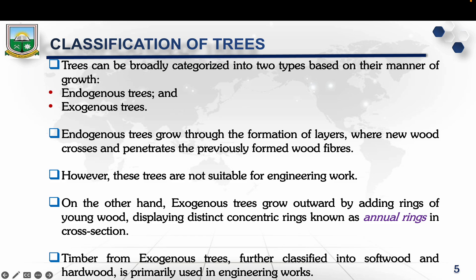Trees are classified into two types based on their growth patterns. The first is endogenous trees, which grow by forming layers where new wood fibers cross into previously formed layers — essentially the tree grows inwards. Endogenous trees are generally not preferred for engineering work because their internal structure doesn't yield a consistent, strong timber needed for construction. The inner layers and inner structure can vary even between trees of the same kind.